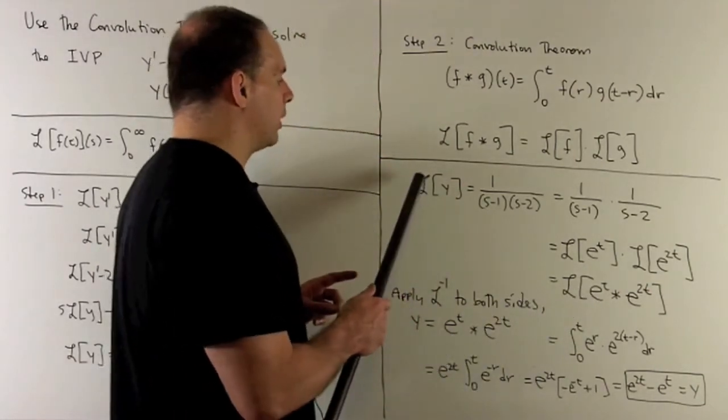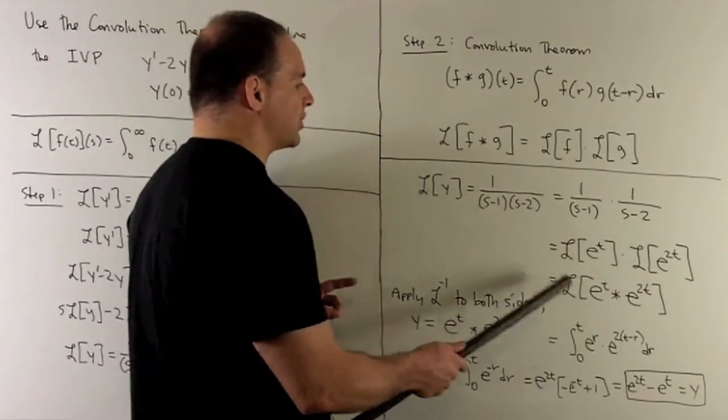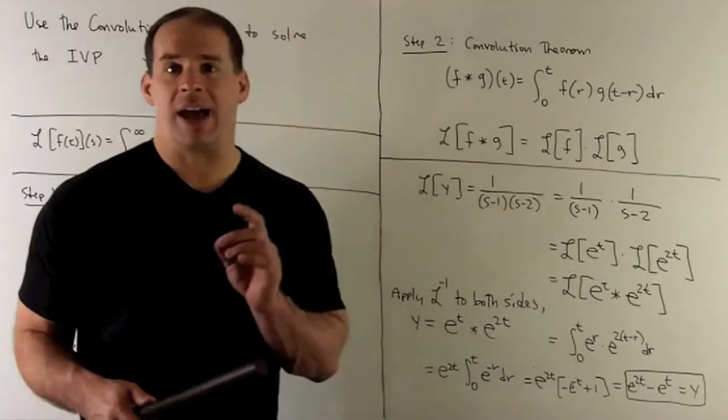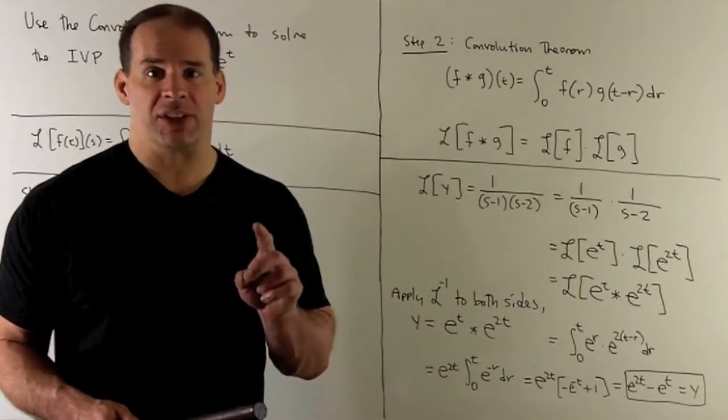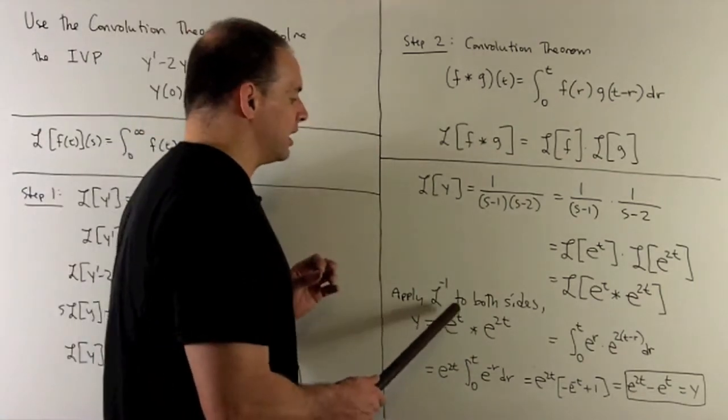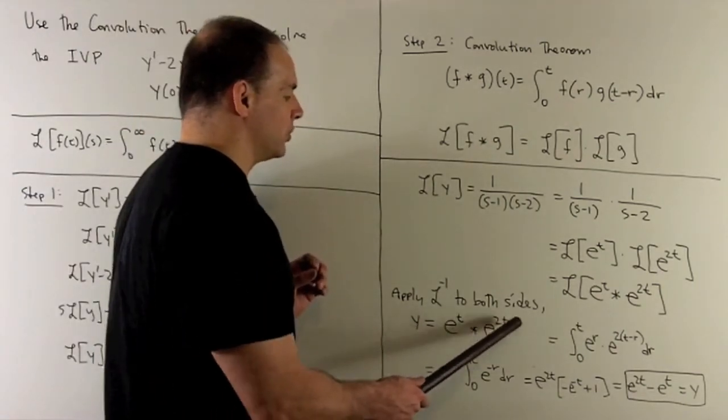Note, I want to get rid of the Laplace transforms on the outside. We do that by applying the inverse Laplace transform. Then, L inverse cancels with L, and we're left with y equals e to the t, convolution e to the 2t.